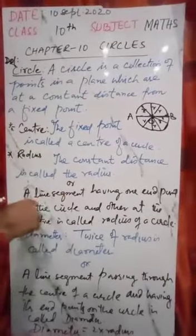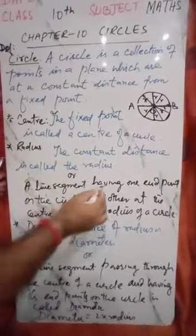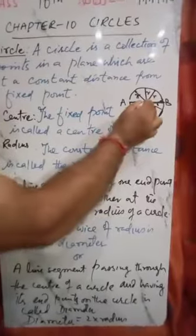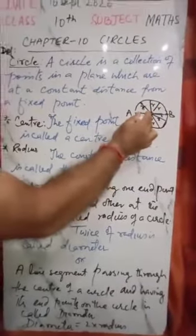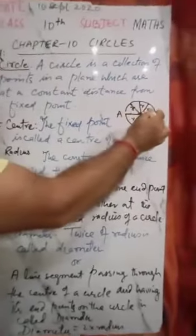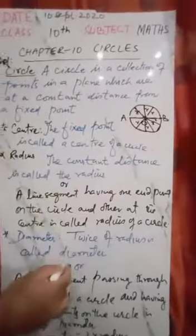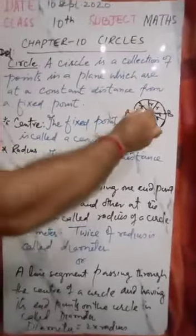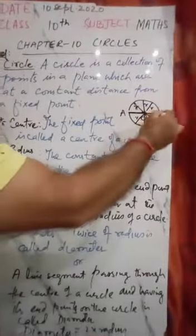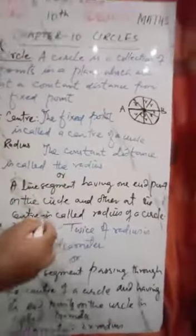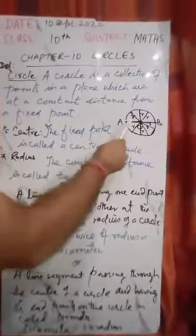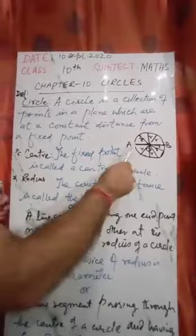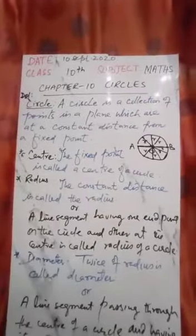Radius is a line segment having one end point on the circle and the other end point at the center. Center se leekar circle to distance that is called radius or twice the radius. If radius is doubled, then we call it diameter. So diameter is the line segment passing through the center with end points on the circle.